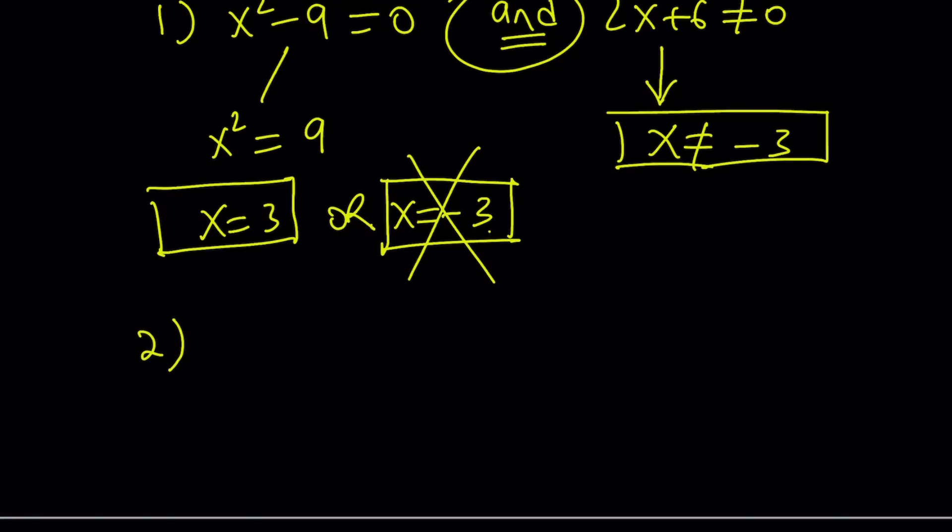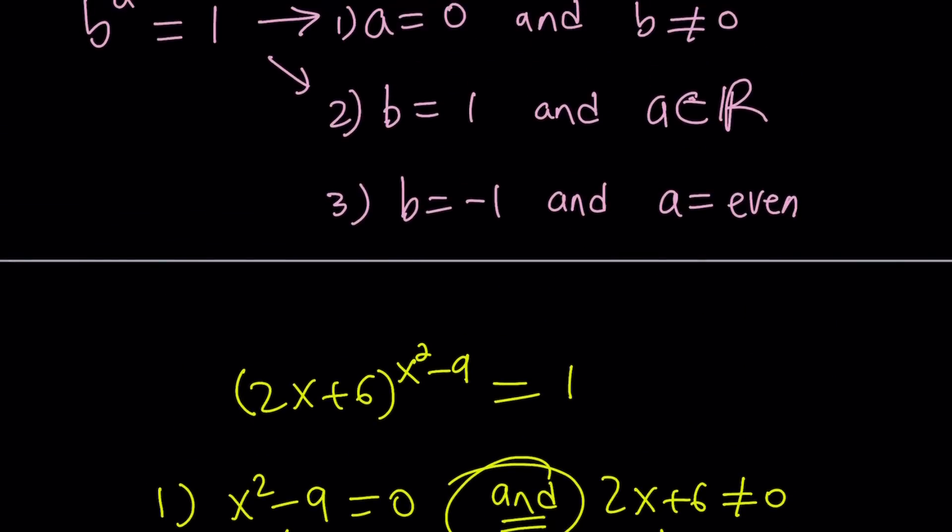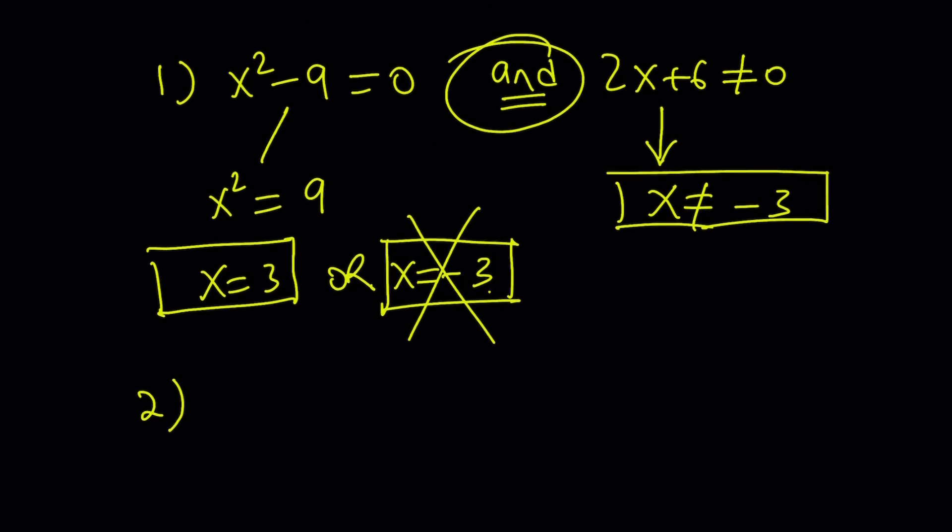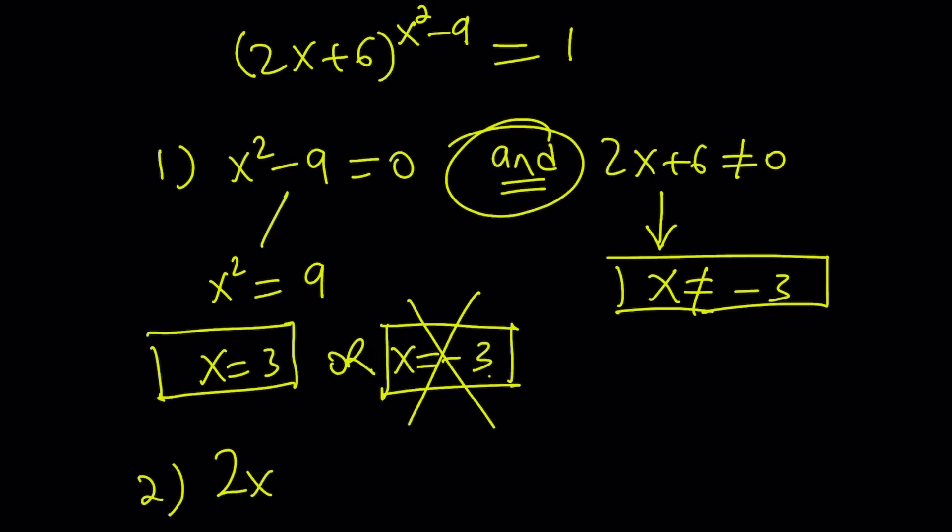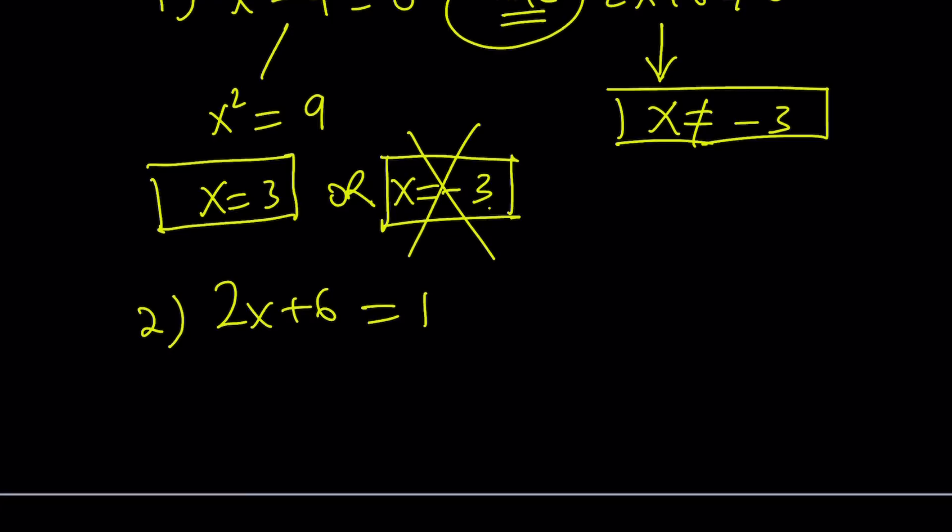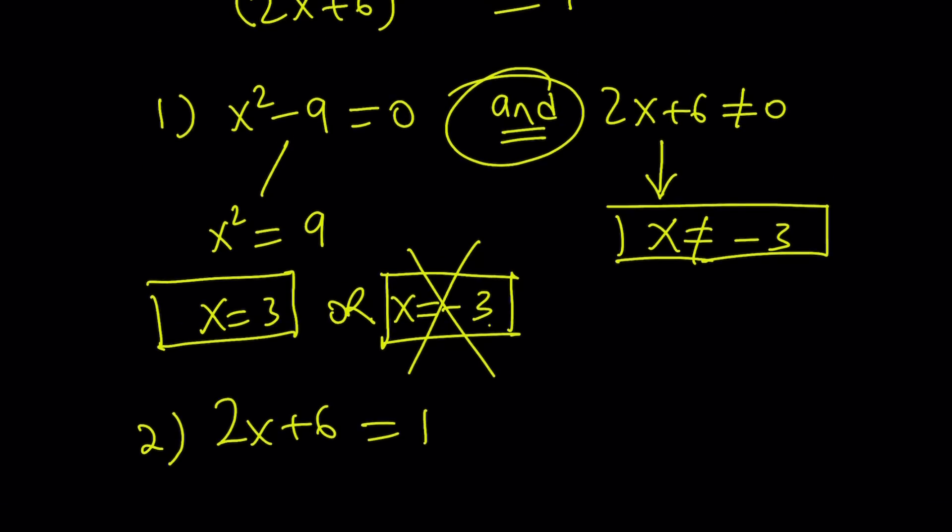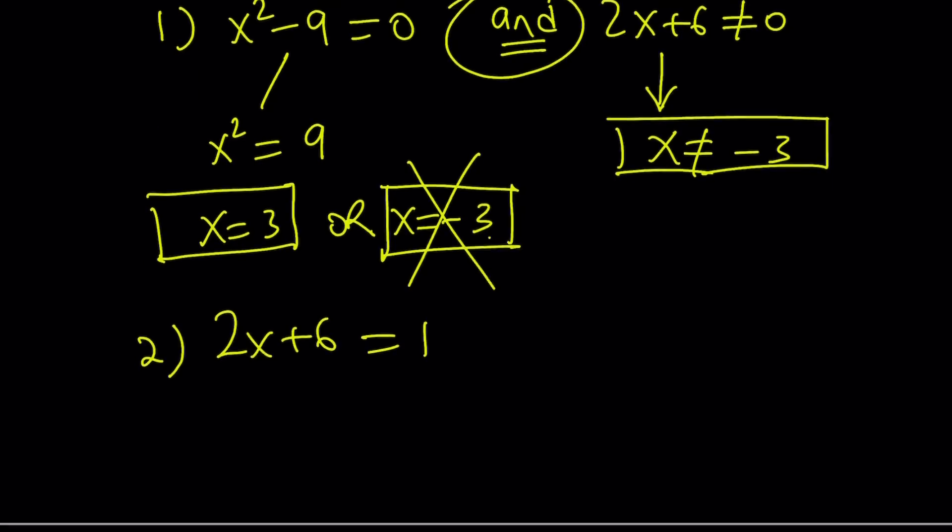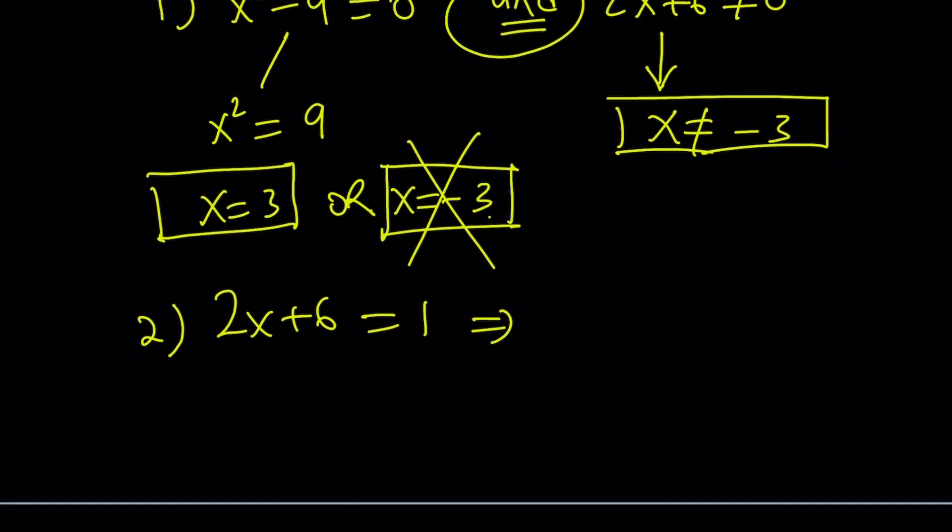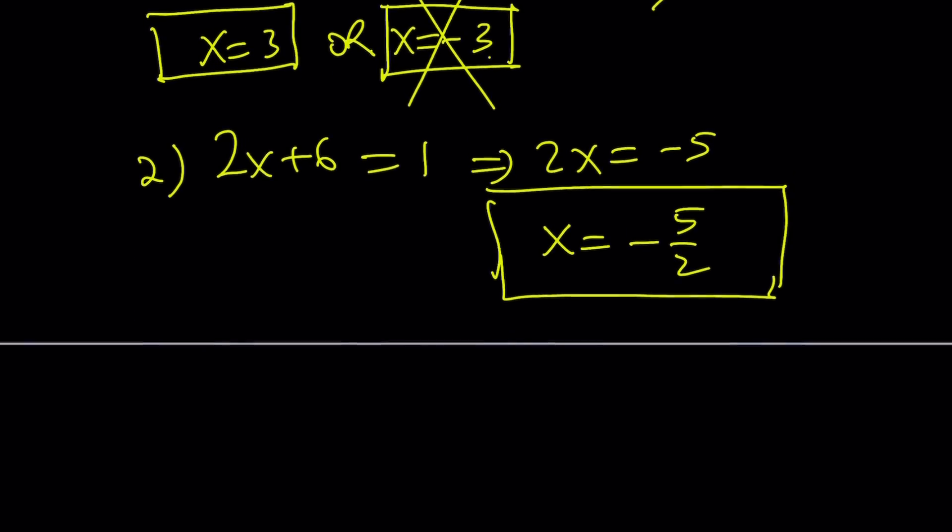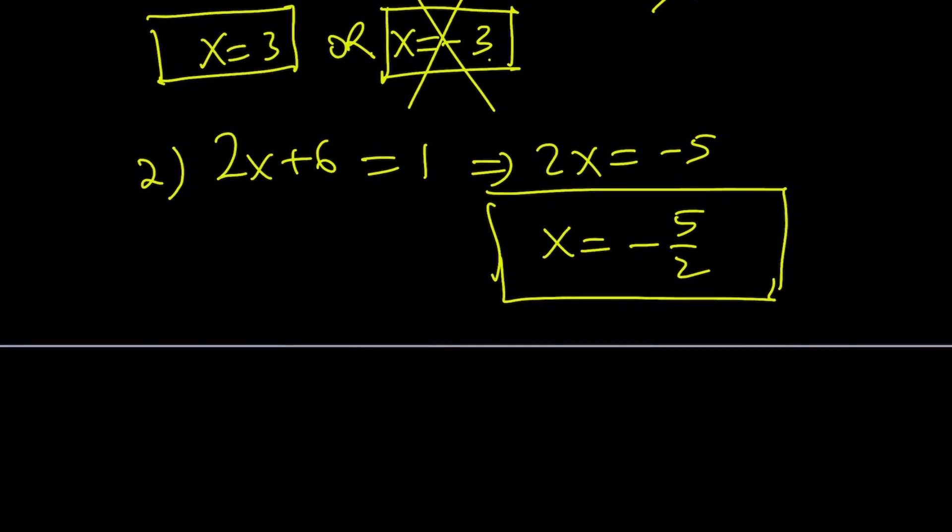So case number 2. Remember b is equal to 1. So when the base is 1 we don't care about the exponent. So the base is 2x plus 6 here. So 2x plus 6 equals 1. You don't even have to worry about x squared minus 9 because if 2x plus 6 is equal to 1, x squared minus 9 is definitely going to be a real number. So from here we get the following: subtract 6, 2x equals negative 5, divide by 2, x equals negative 5 halves. And that solution is definitely acceptable. So that's our second solution. So far we got two solutions: 3 and negative 5 halves. Again consider these when looking at the graph.